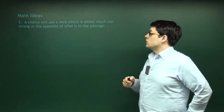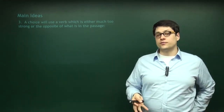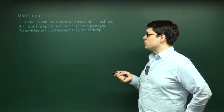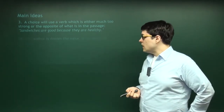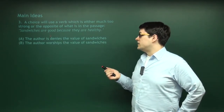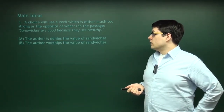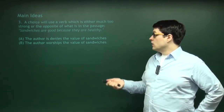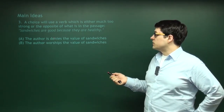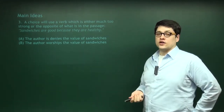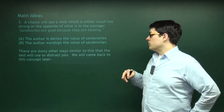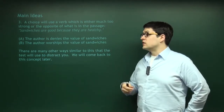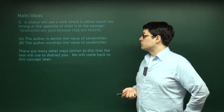Another example would be a choice that uses a verb that's either way too strong or is the opposite of what is actually there. Say the line is 'sandwiches are good because they're healthy,' and one answer choice says 'the author denies the value of sandwiches' — you might skip over 'denies.' Or 'the author worships the value of sandwiches' — that's tricky because he does say they're good, but 'worship' is way too strong. These types are most often used in main idea questions.